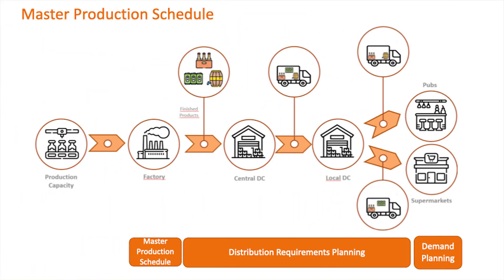The DRP concerns itself with the requirements for distribution, which occurs between customers, DCs, and production plants. Subsequently, the master production schedule, or the MPS, defines what products need to be produced, when, and in what quantities. So the MPS links the sales demand through the distribution requirements plan with manufacturing. Now we have systematically identified the requirements for distribution through the DRP, which were in turn used to identify the requirements for production through MPS.